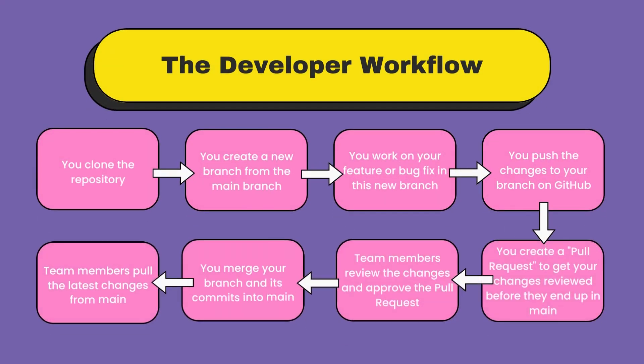Now you've successfully created and merged your first pull request. To summarize the developer workflow: first, create a new branch from main; work on your feature or bug fix in that branch; push all commits and the branch to GitHub and create a pull request; someone from the team reviews it; once approved, merge it after resolving any conflicts. However, if you're the only person working on the project, it doesn't make sense to use pull requests — you can directly merge your branches using git merge instead.